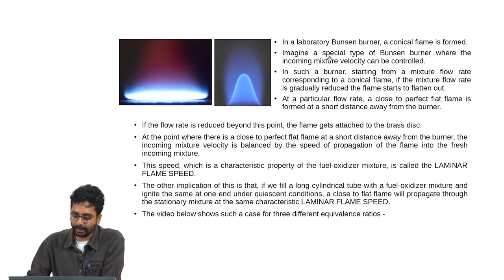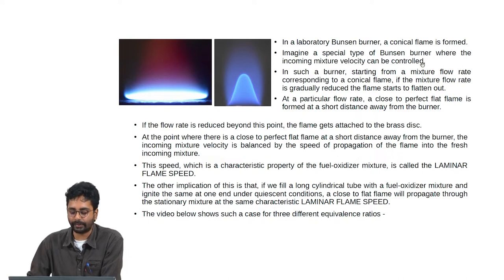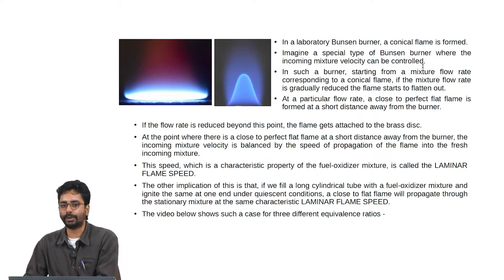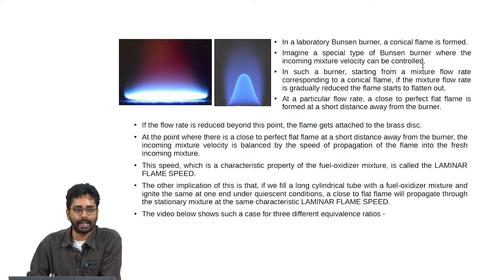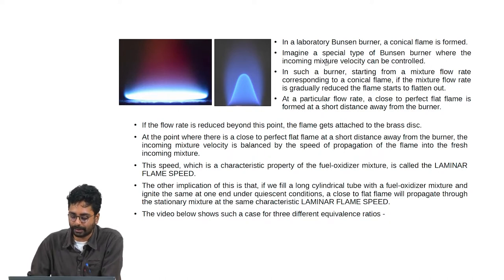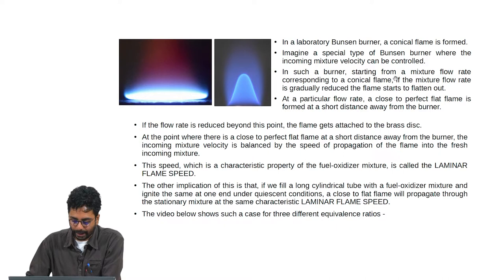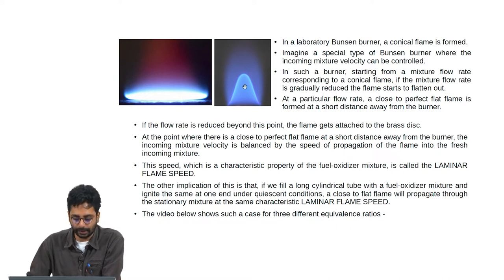Commonly when you ignite a Bunsen burner in a laboratory, a conical flame is formed. Now imagine a special type of Bunsen burner where the incoming mixture velocity can be controlled. Starting from a mixture flow rate corresponding to a conical flame — that is the flame here.